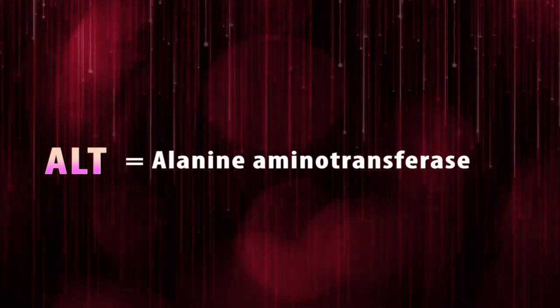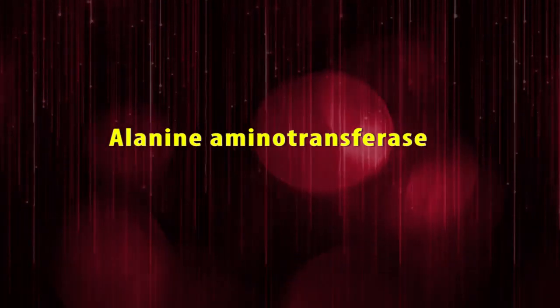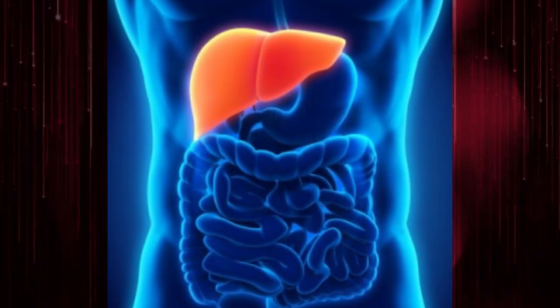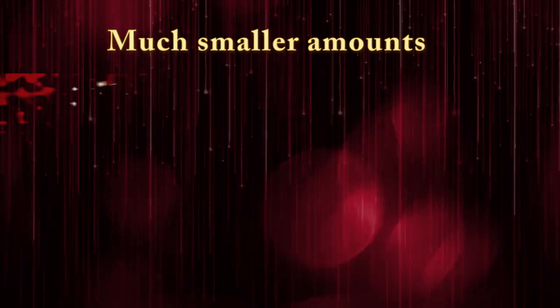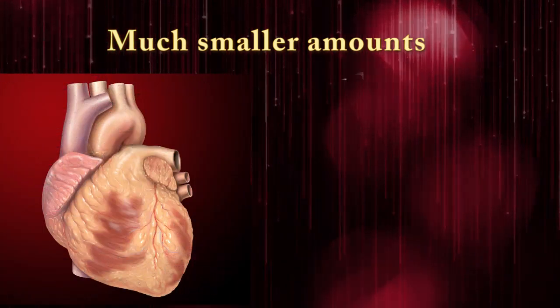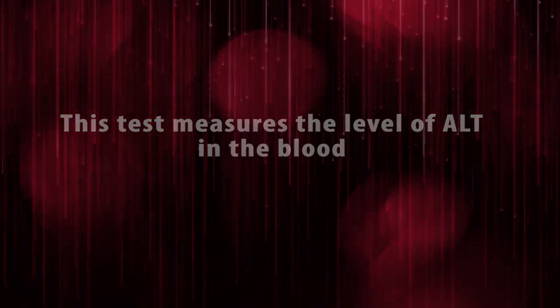ALT, also called alanine aminotransferase enzyme, is found mostly in the cells of the liver and kidney. Much smaller amounts are also found in the heart and muscles. This test measures the level of ALT in the blood.